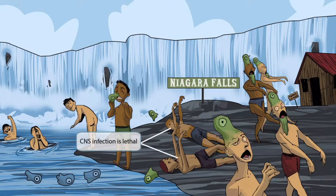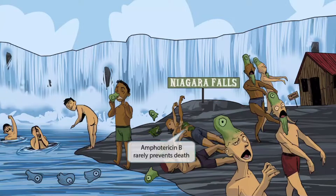These amoebas have used up their hosts and left the lifeless bodies on the ground as they departed back into the water. This represents the fact that Naegleria fowleri is lethal. You can see some amphibian frogs jumping on these dead bodies — amphibians sounds like amphotericin B. Amphotericin B is rarely effective in treating Naegleria fowleri, but in a last-ditch effort to try to save your patient, amphotericin B should be administered, with a low expectation of it actually helping.